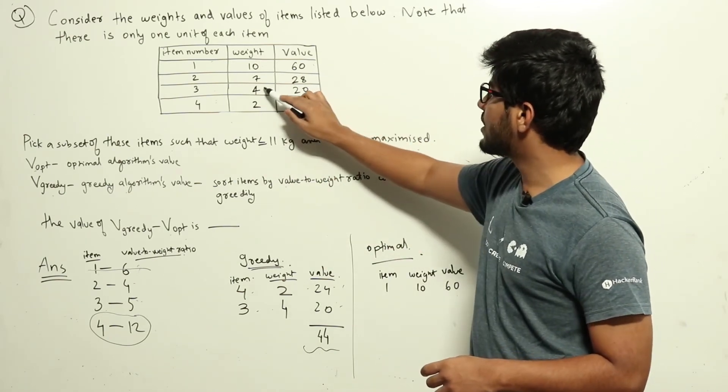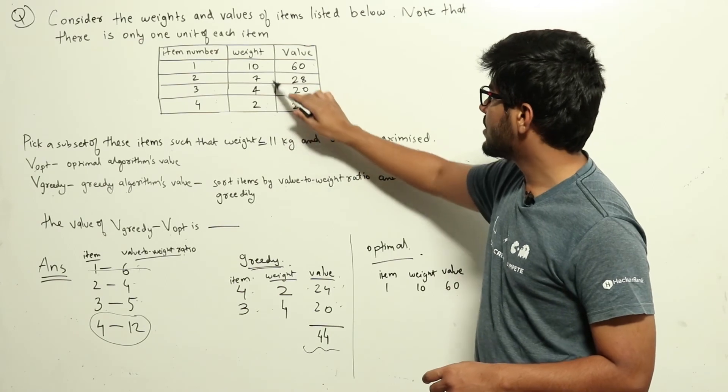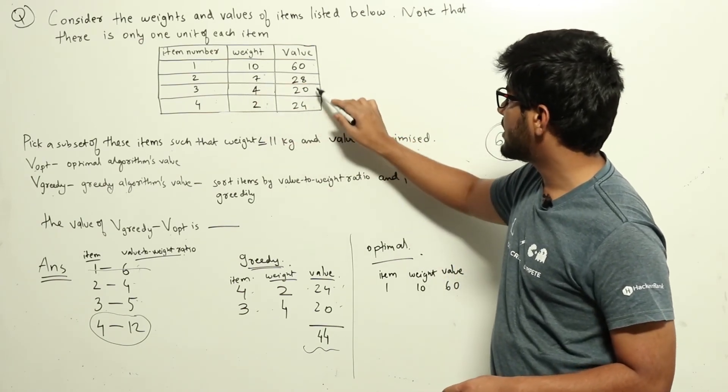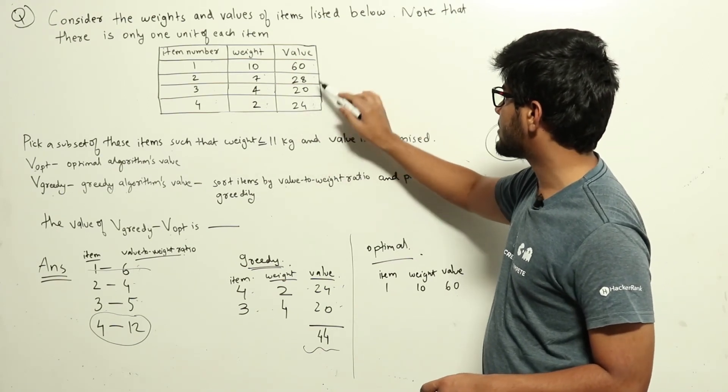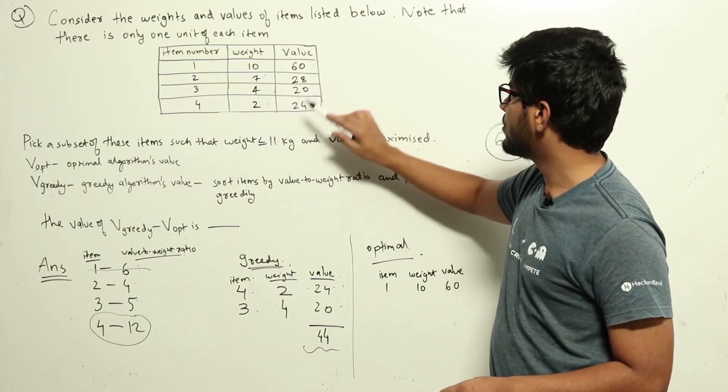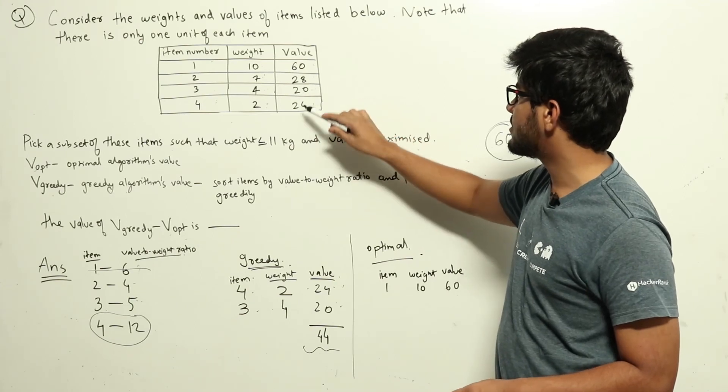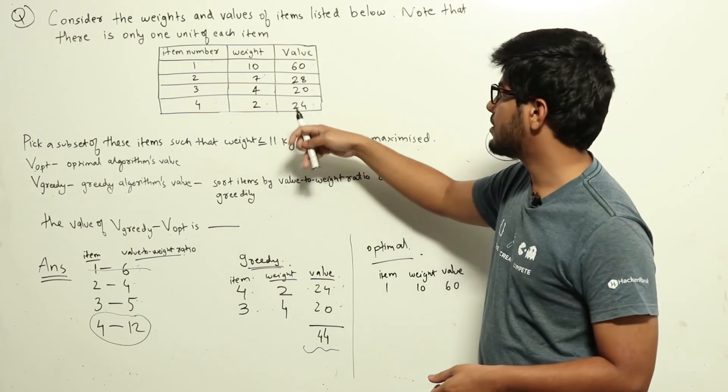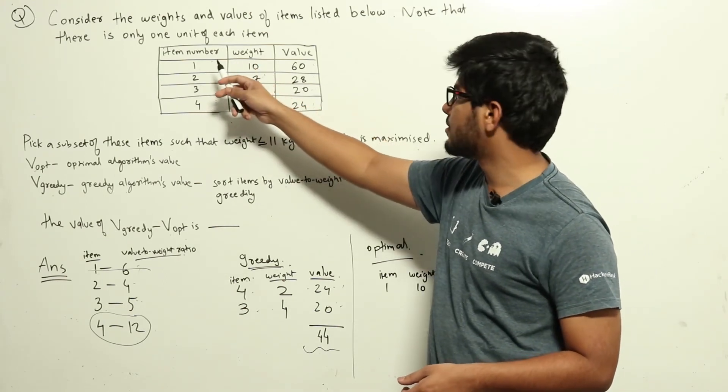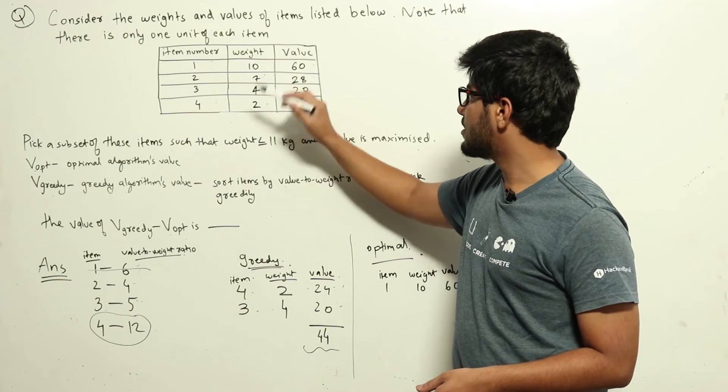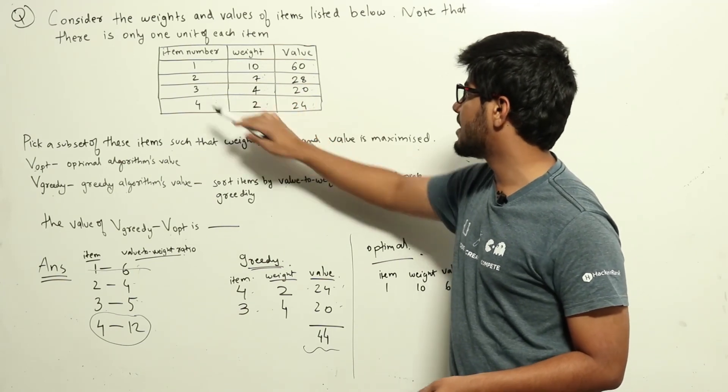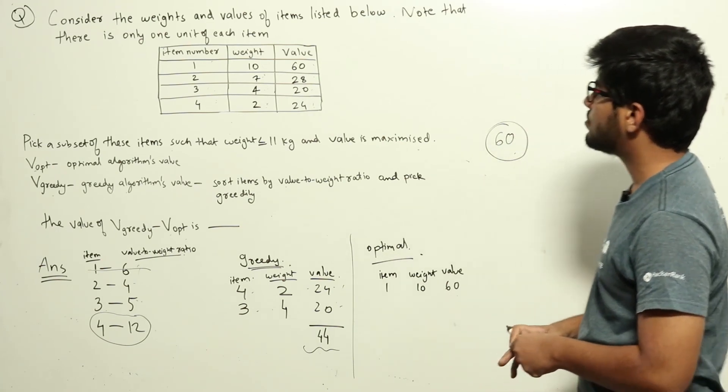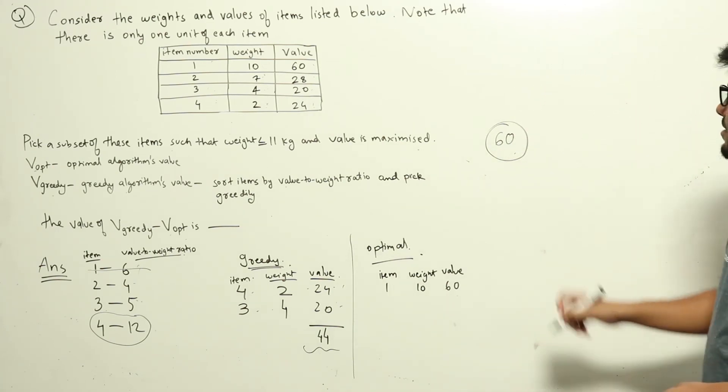Now let's try item 2, which has weight 7. The remaining weight is 4, so any one of these two items can be picked. If I pick items 2 and 4, it's 28 plus 24, which is less than 60. If I pick items 2 and 3, it's 28 and 20, which is also less than 60. So if I pick item 2, there's no better way to maximize it. The only other way is to pick items 3 and 4, which is 20 plus 24, again less than 60. So the optimal maximum value is 60.